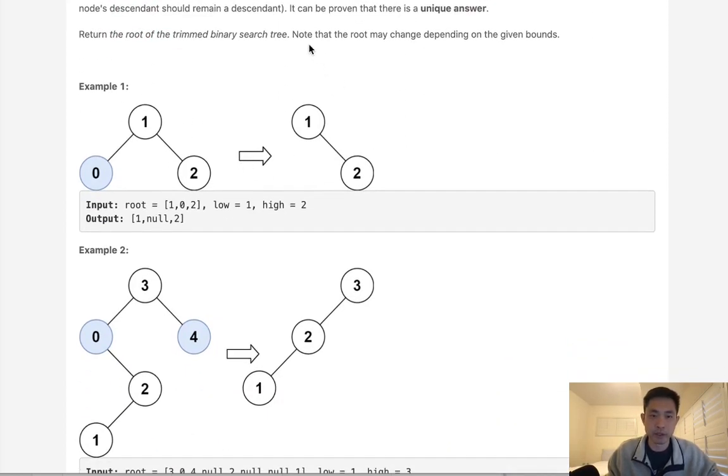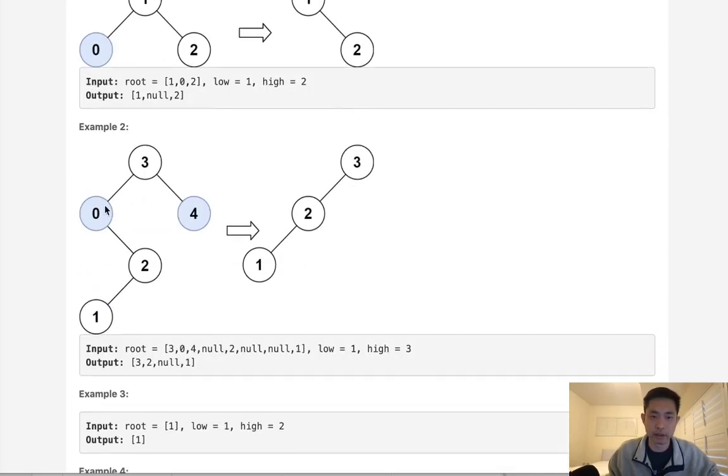It also says note that the root may change depending on the given bounds. So the very first thought might be to just traverse our tree, and if we find that the node is not within bounds, we could just get rid of it, make it none. And that would work for something like this. But what about a tree that looks like this? If we just set this to none and returned, we would be losing the 2, 1 here.